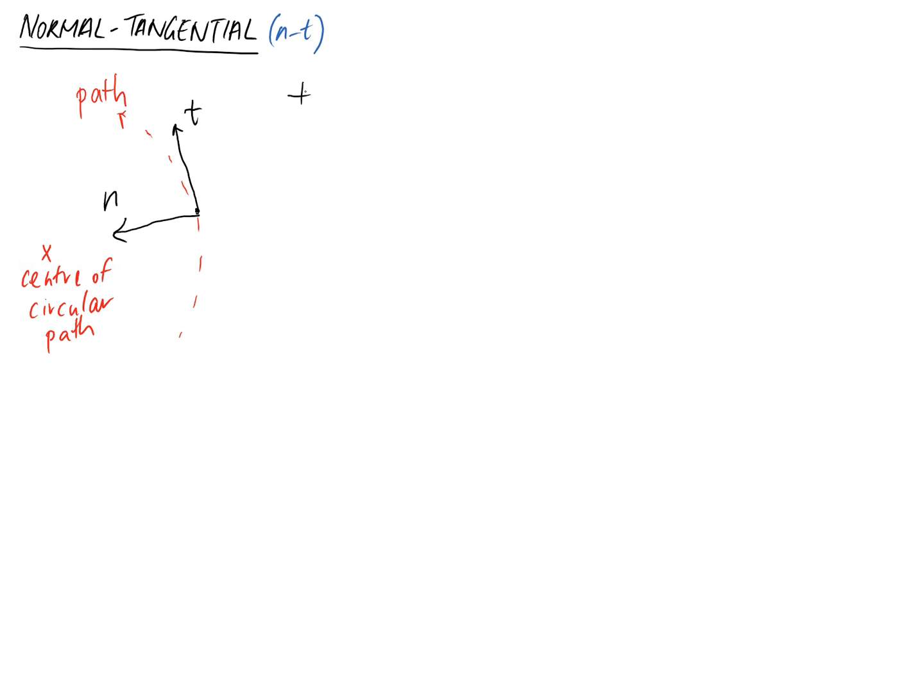So let's just quickly note that down. t should be pointed in the direction of motion. And n is pointed toward the center of the circular path that it makes at that point.